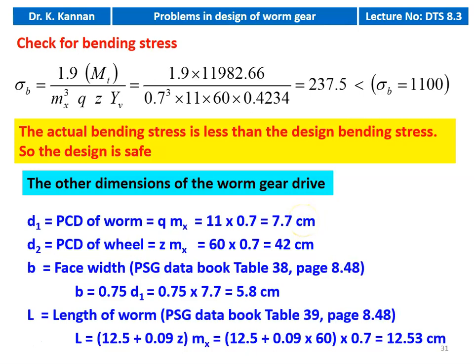We calculate the other dimensions of the gear drive. D1, PCD of the worm, already calculated: 11 × 0.7 = 7.7 cm. D2, PCD of the wheel: Z × MX = 60 × 0.7 = 42 cm. Face width from table 38, page 8.48: B = 0.75 × D1 = 0.75 × 7.7 = 5.8 cm. Length of the worm from table 39: L = 12.5 + 0.09 × Z × MX = 12.5 + 0.09 × 60 × 0.7 = 12.53 cm. These are all the dimensions of the worm gear drive.